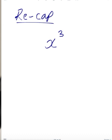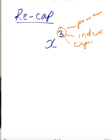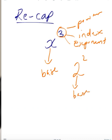Before we start, let's recap some important key terms. If I have x to the power of 3, that little 3 can be called a power, an index number — plural: indices — and later in Year 10 it's also called an exponent. The larger number on the bottom is called the base or base number, and the base can be numerical or a variable.